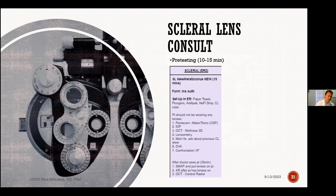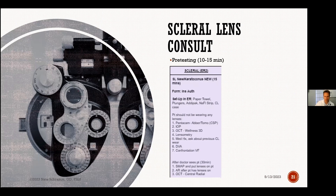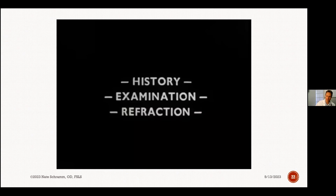I plan to show you how to efficiently fit a patient. Patients are referred to my clinic already expecting a specialty lens. We use a testing grid that technicians can read and know exactly what to do — it tells them to put down a paper towel, have plungers, Adepac, a fluorescein strip, and contact lens case ready. Having the room set up with all supplies ready is key to efficiency. We also have testing grids for myopia management, Ortho-K, VT consults, atropine follow-up, scleral lens dispenses, hybrid, and RGP dispenses.